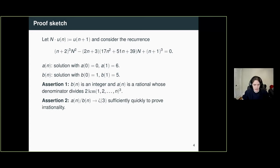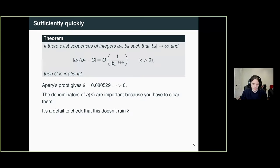The next assertion is that, in fact, A of N over B of N converges to zeta of 3. It is a rational approximation of zeta of 3. Not only is it an approximation, it's a very good approximation. It's, in fact, too good of an approximation. It converges so quickly that it implies that zeta of 3 is irrational. And that has a technical meaning. And let me explain what that is right here. So when I say that it converges too quickly,